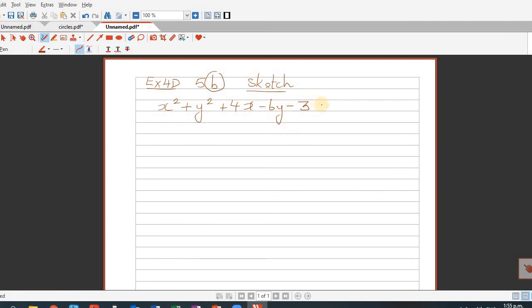I'm going to group the x's together, the y's together, and move this number to the other side using the completing the square method. This is x squared plus 4x, I'll leave some gap here, plus y squared minus 6y is equal to 3.